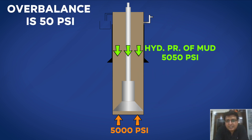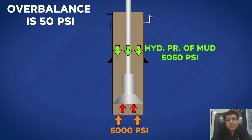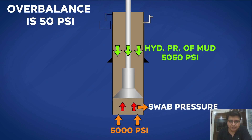When I stop for connection, I will lose the annular pressure losses or friction losses because I have to stop the pump to make a connection. Now the hydrostatic pressure is 5050 psi whereas the formation pressure is 5000 psi, so the overbalance left is only 50 psi. When I raise the string to space out, there will be a swab pressure beneath the bit — a negative pressure created due to the upward movement of the string. Since the overbalance is only 50 psi, if the swab pressure is more than 50 psi there is a hundred percent chance that influx will come into the wellbore.